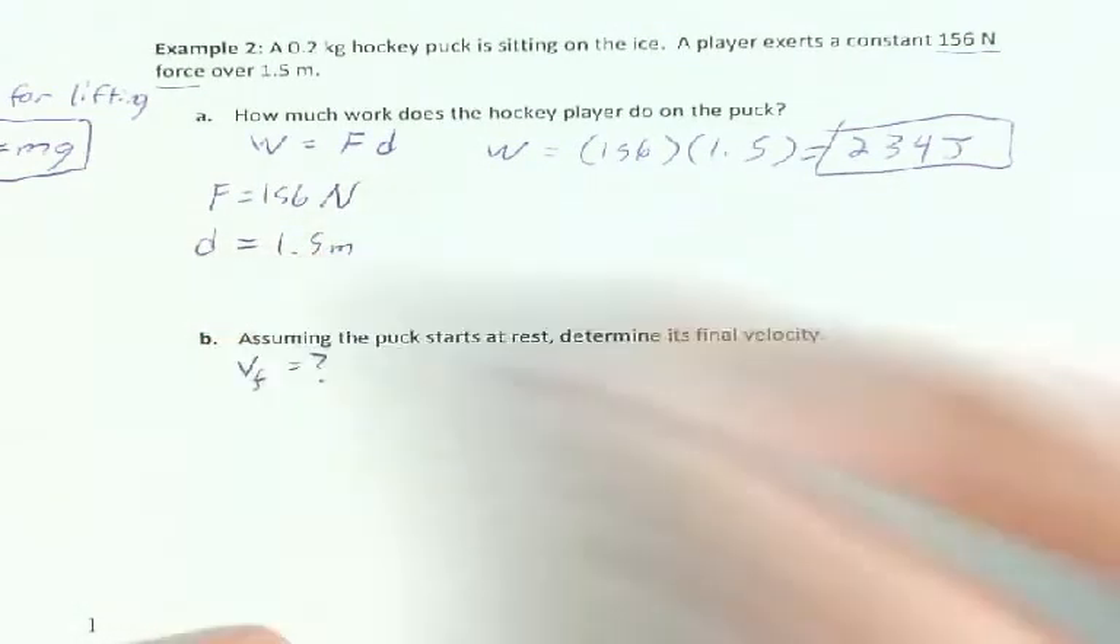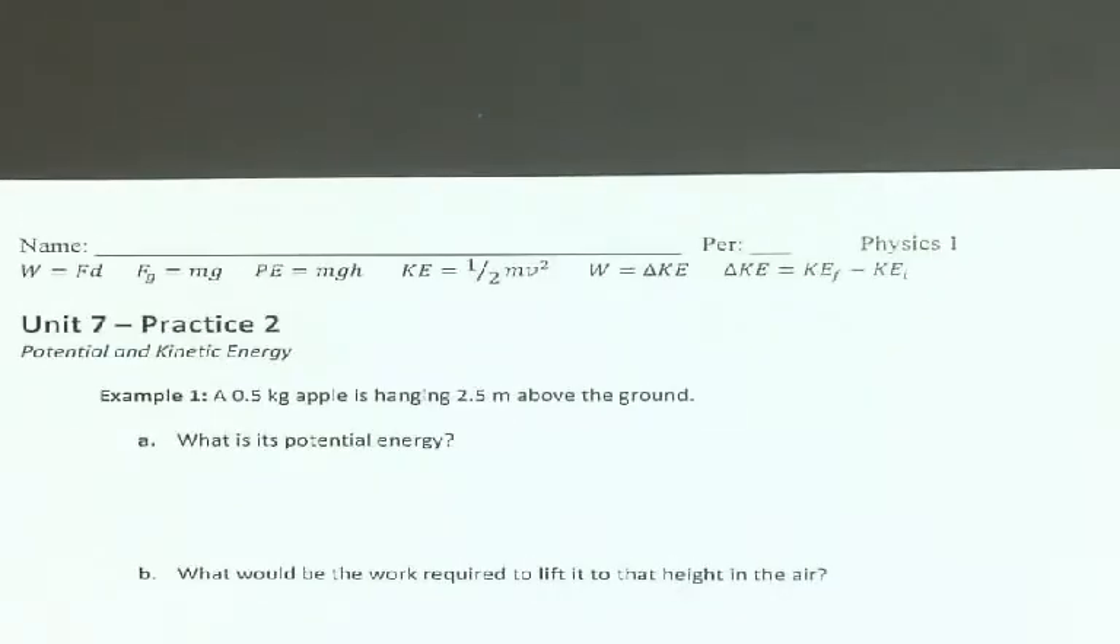Assuming the puck starts at rest, determine the final velocity. So I'm trying to find V final. But this is where people get confused, because they're saying to themselves, well, okay, none of these equations have V final. Literally nothing says VF on it. None of them. So what we need to do is we need to jump back in our minds to notes 2 from last time, specifically the very last thing I said.